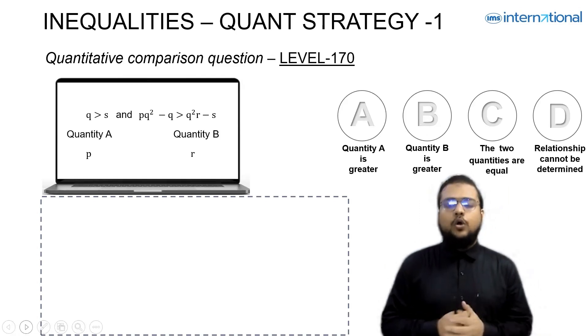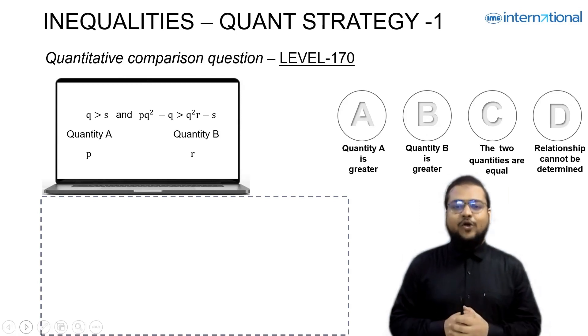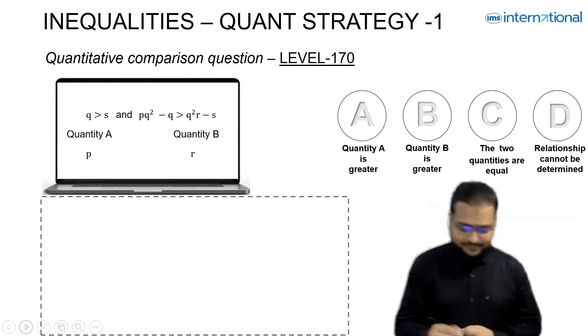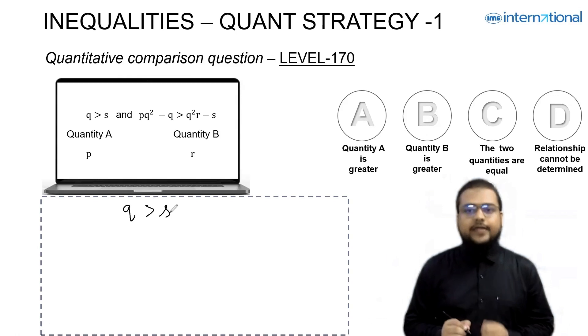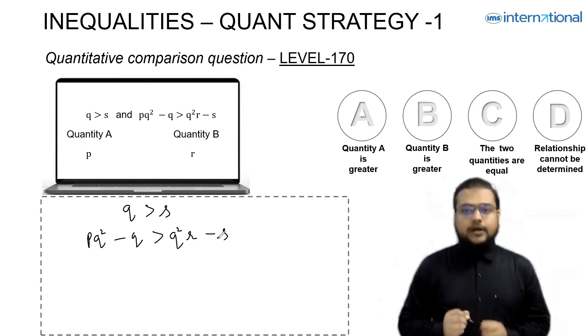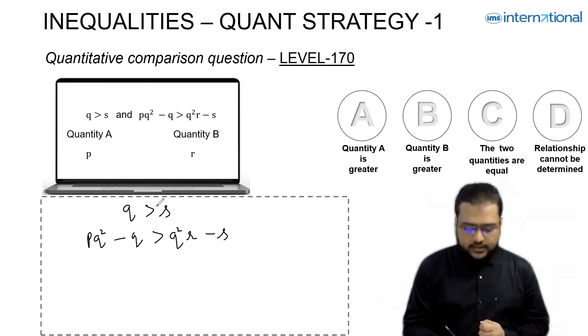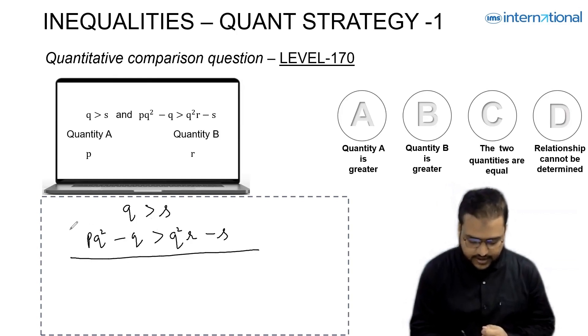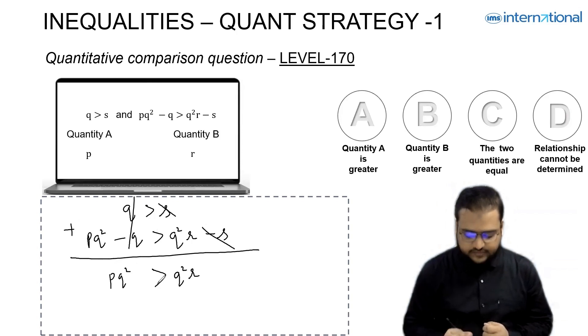There is one very interesting hack of inequalities: you can add the inequalities. Let's try to add the inequalities and see what relation we will be getting. Q greater than S, and remember to add the inequalities, the sign must be oriented in the same direction. So we have greater in the first inequality, then you must have the same sign in the second inequality. Now let's add them up. So when I add, Q minus Q will be gone. I will be having PQ² and S minus S will be gone, and I will be having Q²R with the same inequality sign.